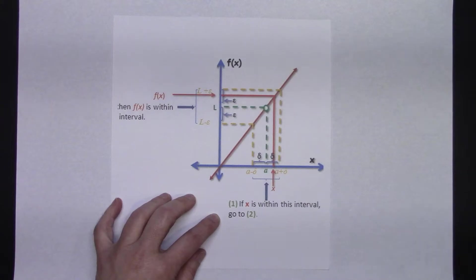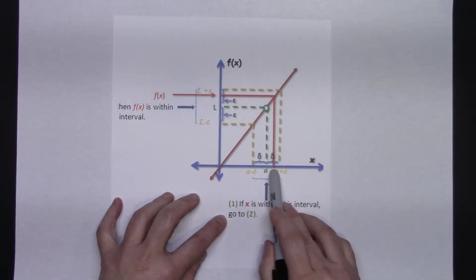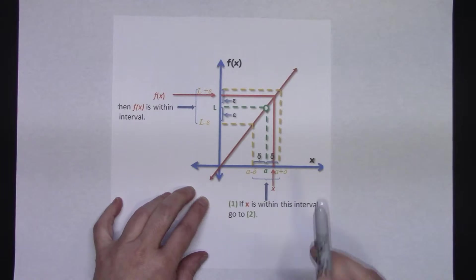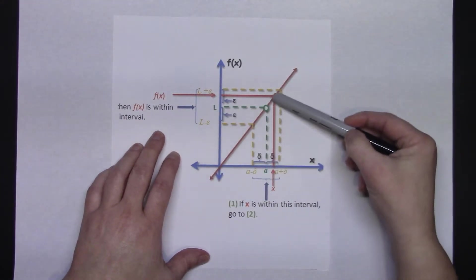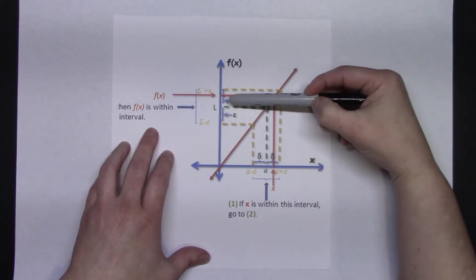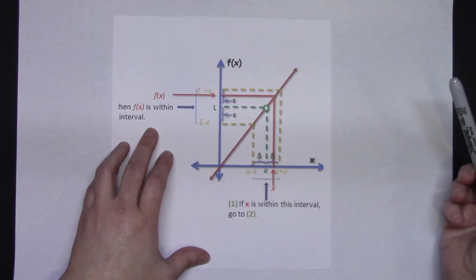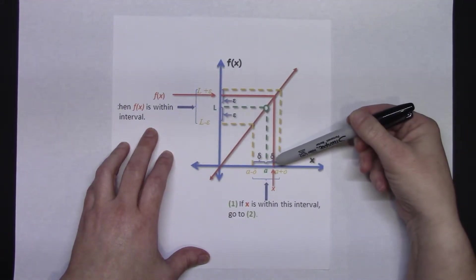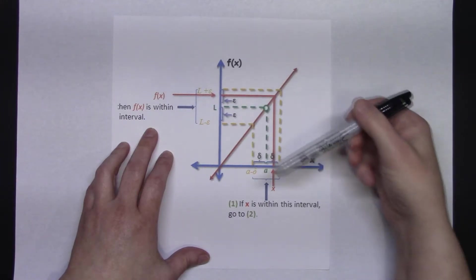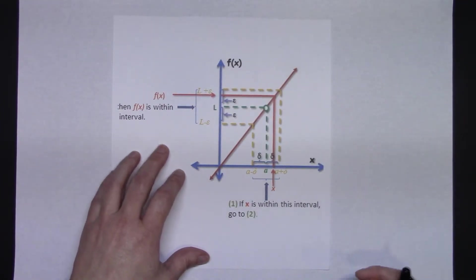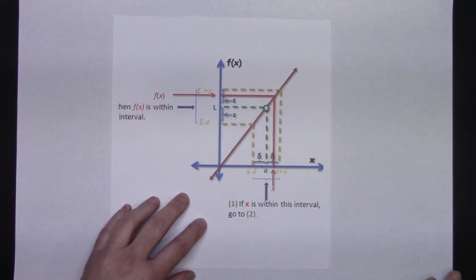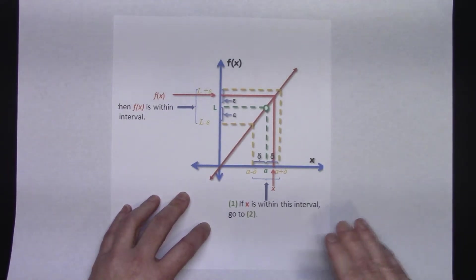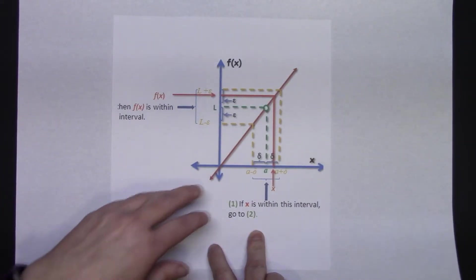So basically what this definition ensures us is that if x is within this interval, if x falls within this interval, then we're guaranteed to have f of x within this interval up here. So the connection between your delta and your epsilon values pertaining to that. So just pictorially, you may be seeing it like that, looking at it like that may give you a different perspective on that somewhat complicated definition.